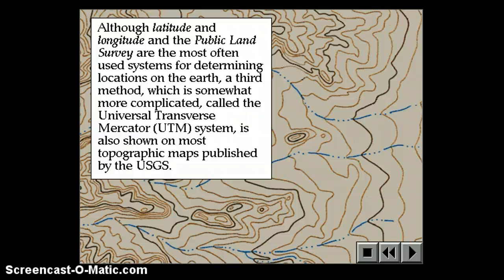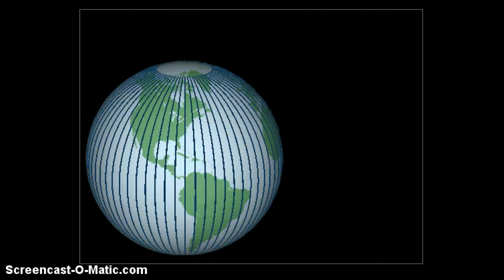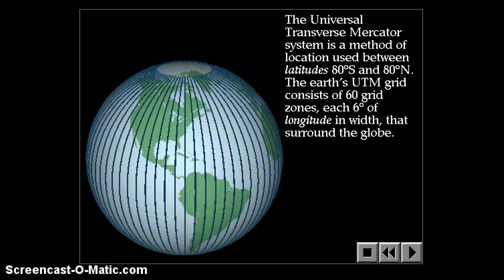Latitude and longitude, the public land survey, are used regularly. The third method is complicated, it's metric and it's used a lot by scientists. So because a lot of scientists use topographic maps, the USGS includes the UTM coordinates on topographic maps as well.